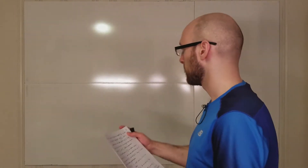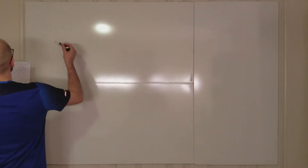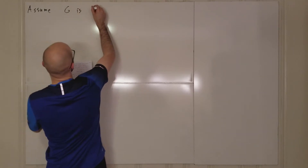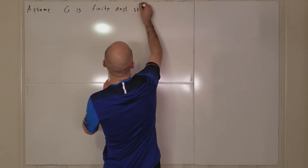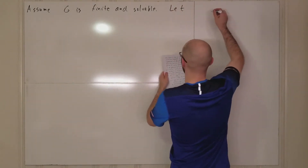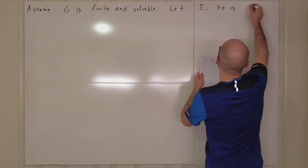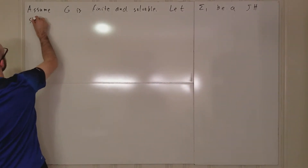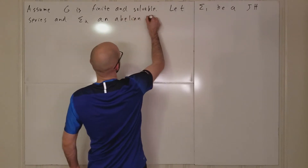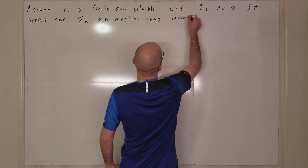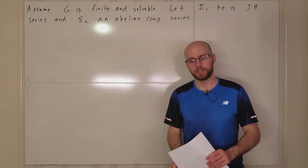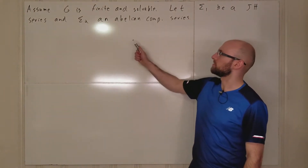We have a few more things we can say about solvable groups. Assume G is finite and solvable. Let sigma 1 be a Jordan-Hölder series and sigma 2 an Abelian composition series. We know there's a Jordan-Hölder series because G is finite, and we know there's an Abelian composition series — a composition series in which all of the graded pieces are Abelian — because we proved that that's equivalent to being solvable.